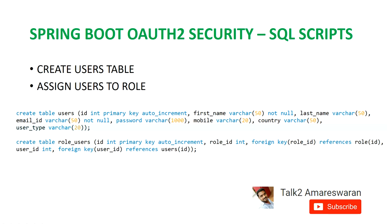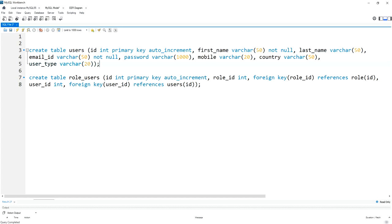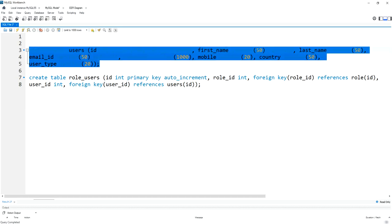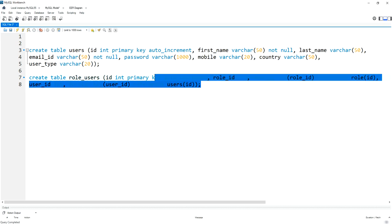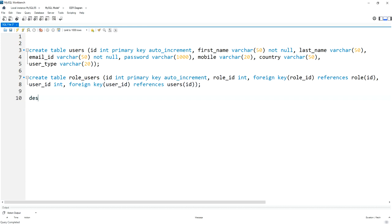Next, I am going to create the user table and assign users to roles. I created a table called users, and then I created another table called role_users. Now I am going to create the users table and role_users table in MySQL Workbench. I am creating the users table and the role_users table.